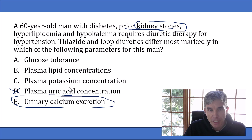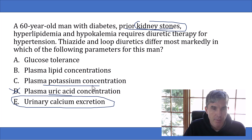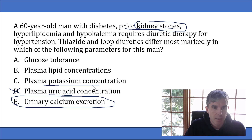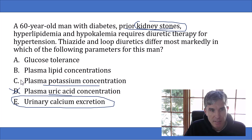Both thiazide and loop diuretics also lower the plasma potassium concentration — they're famous for this effect. Many patients who take these drugs need potassium supplements so their potassium doesn't get low. Since both drugs lower plasma potassium concentration equally, answer choice C is not correct.